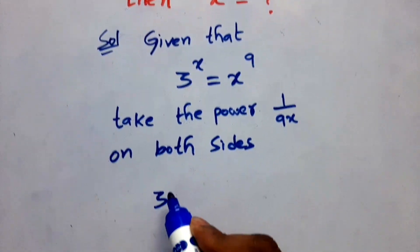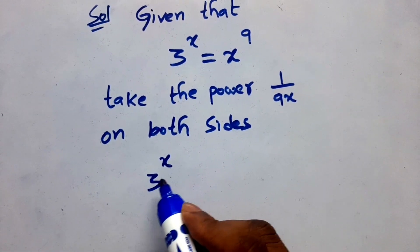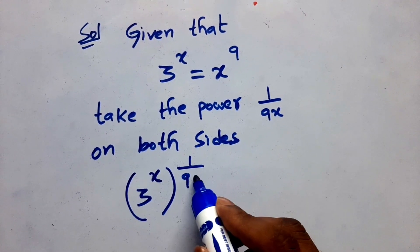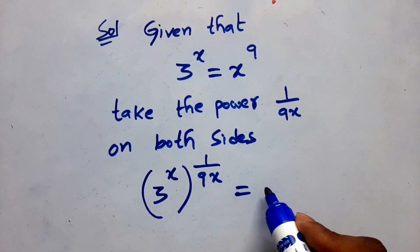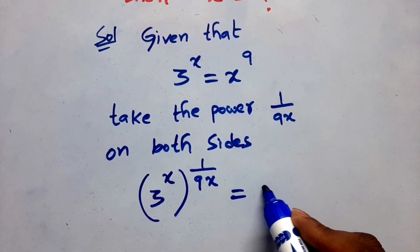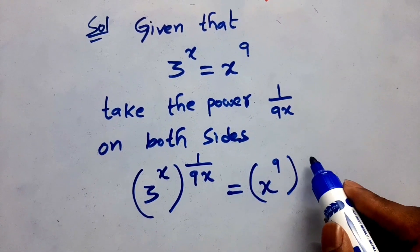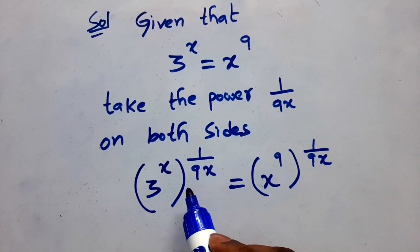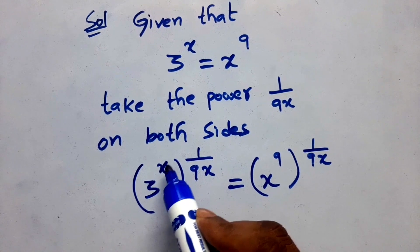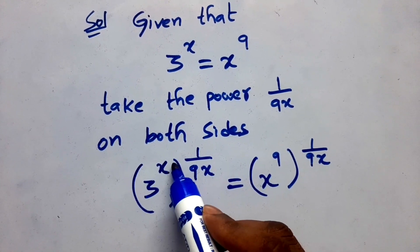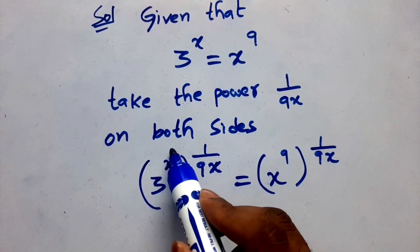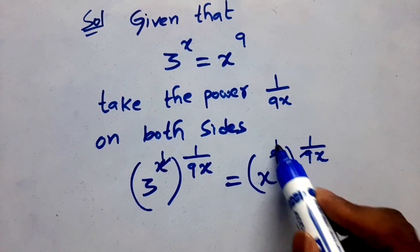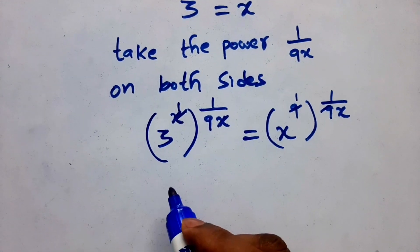Here see, this one will go to numerator, then after you will cancel x with x one time here. See here also, 9 divides 9 one time, 9 and 9 cancel. What are the remaining values?